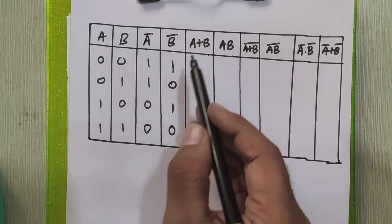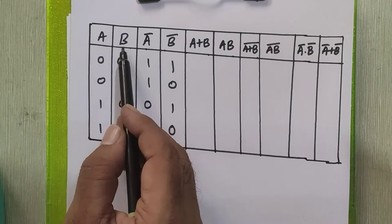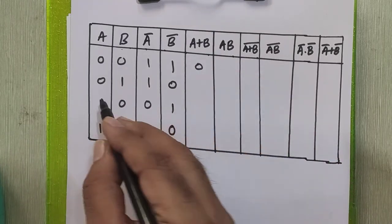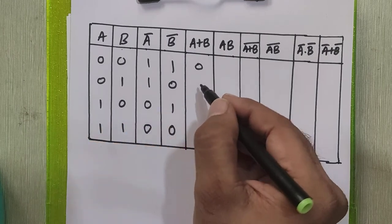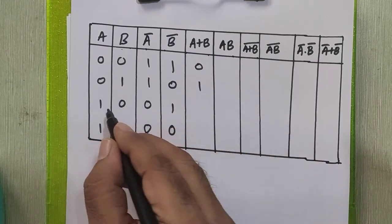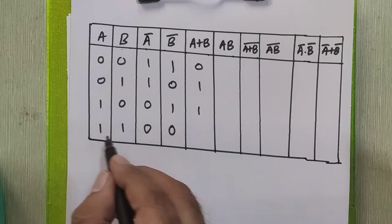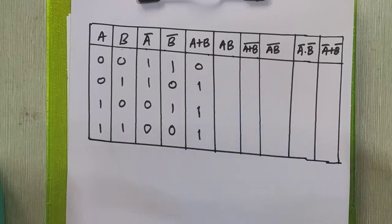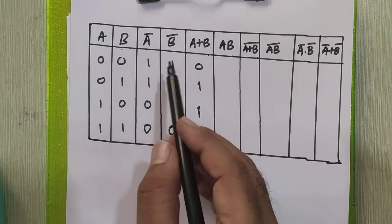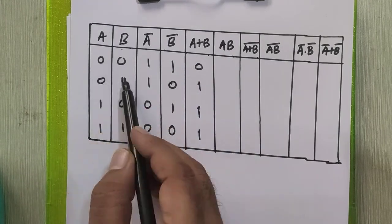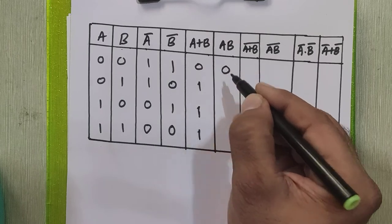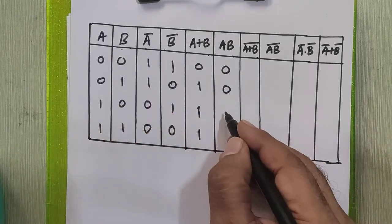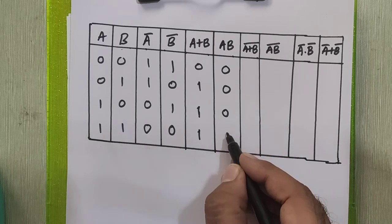To find A plus B, we add the two inputs. In a logic OR table: 0 plus 0 is 0, 0 plus 1 is 1, 1 plus 0 is 1, and 1 plus 1 is 1. Now find the product AB by multiplying: 0 into 0 is 0, 0 into 1 is 0, 1 into 0 is 0, 1 into 1 is 1.